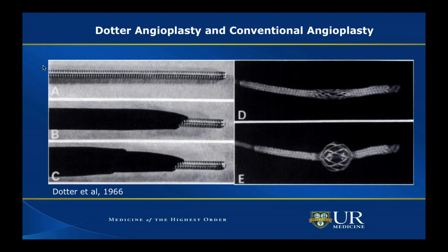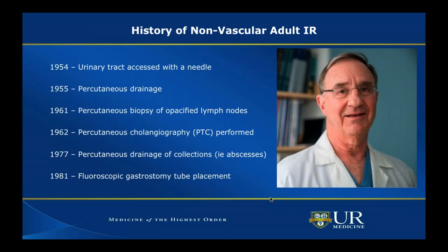Charles Dotter came up with the idea of angioplasty — not what we think of today. He took a series of catheters, essentially thick wires with dilators attached, and used those dilators to slowly open a lesion. After that, balloon technology appeared. The advent of balloon angioplasty, embolotherapy, and vascular access were a trio of events that sparked further developments in adult interventional radiology on the vascular side.